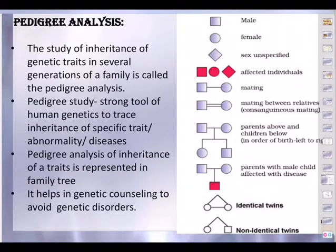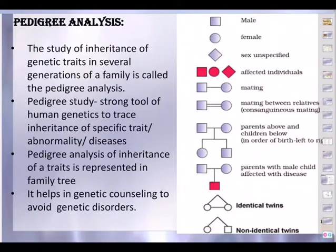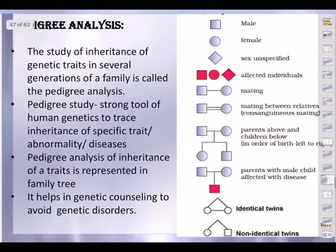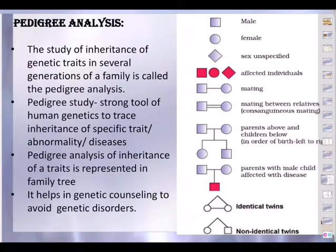The study of inheritance of genetic traits in several generations of a family is called pedigree analysis. We take parental generations, then F1, F2, F3 generations. If we are able to study the particular pattern of a genetic trait appearing across several generations, then it is pedigree analysis. It is a very strong tool of human genetics used to trace the inheritance of a specific trait, abnormality, or disease.